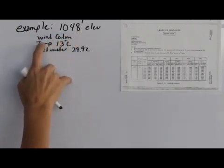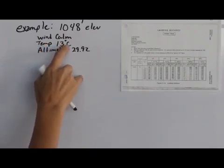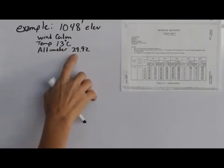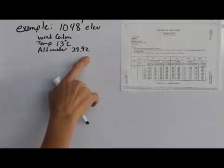The winds are calm, the temperature is 13 degrees Celsius, which is standard for this elevation, and the altimeter setting is standard pressure, 29.92.